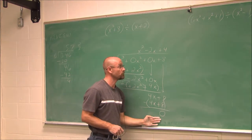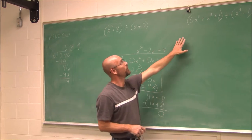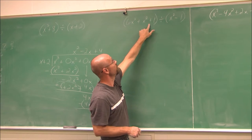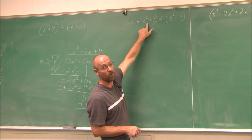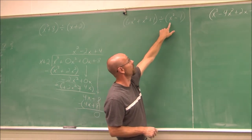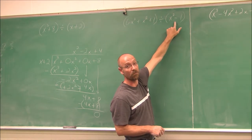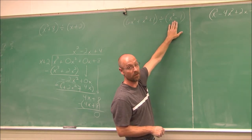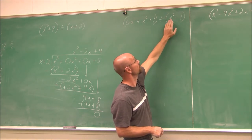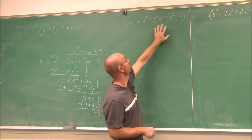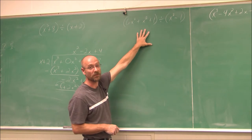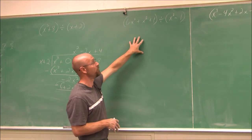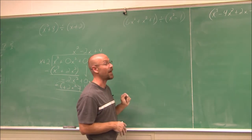That tells me there is no remainder — this polynomial was evenly divisible by that polynomial. Now here's another example: 6x cubed plus x squared plus 1. We should recognize that there's a placeholder missing in the polynomial, and the divisor also needs a placeholder. This would be x squared plus 0x minus 1. I want you to try this one yourself — make sure you have your placeholders and do that division.